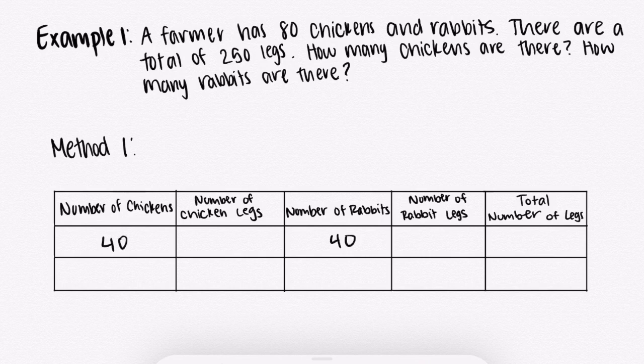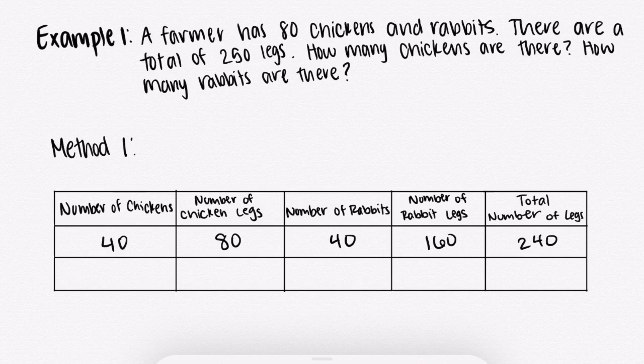If there are 40 chickens, since each chicken has two legs, there will be 80 chicken legs. And since each rabbit has four legs, there will be 160 rabbit legs, so the total number of legs is 240. But since the question says there are a total of 250 legs, we will need 10 more legs.